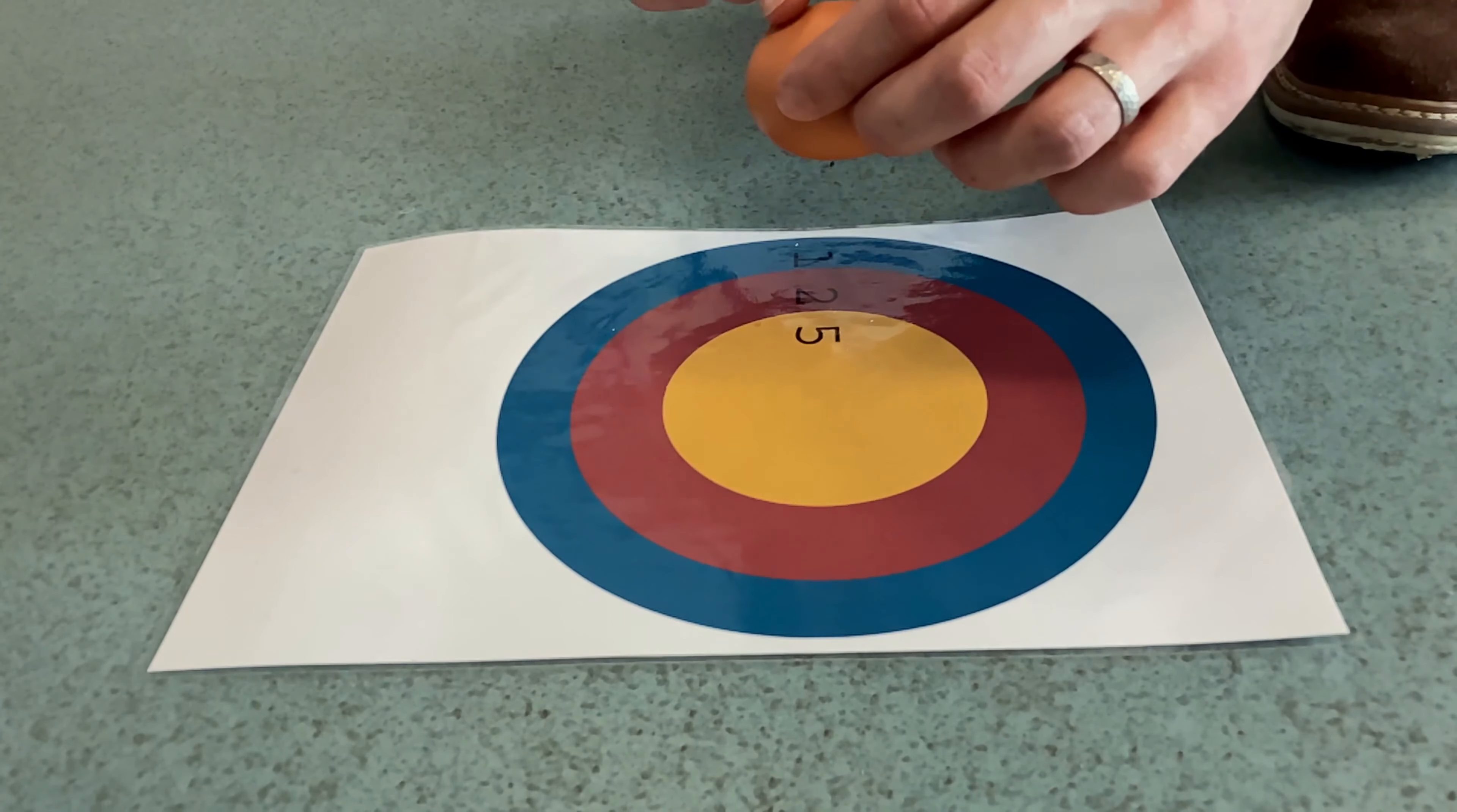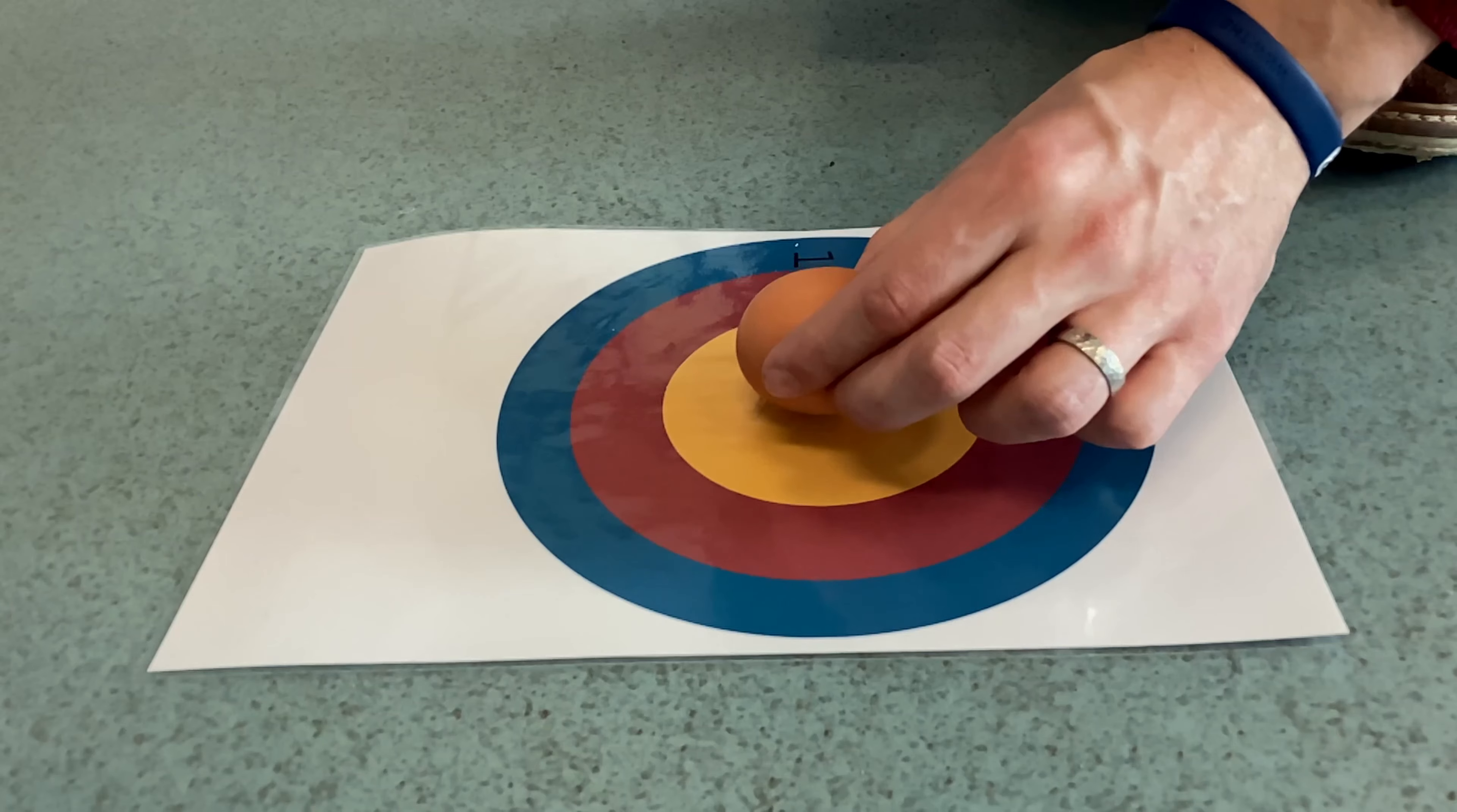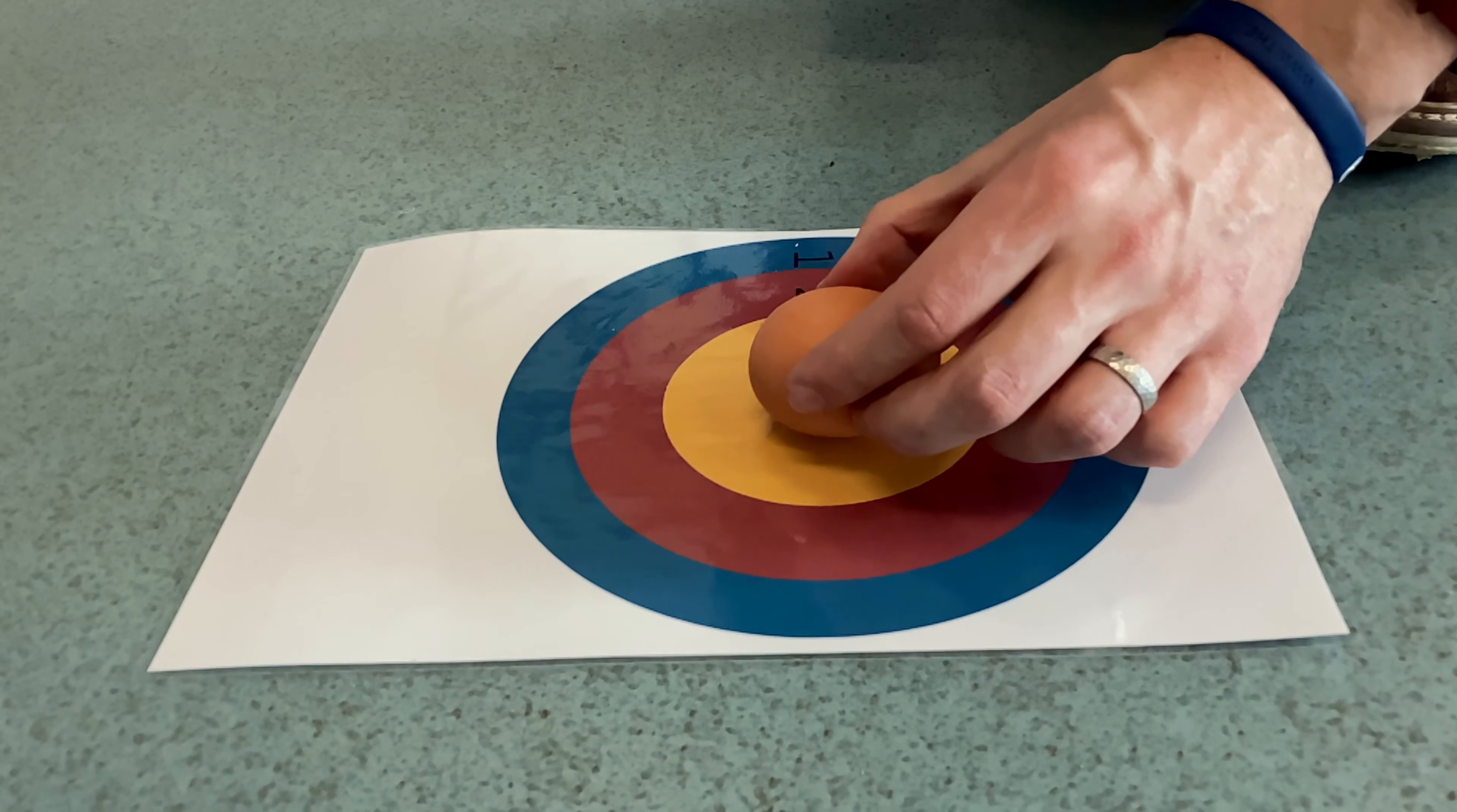To explain these we're going to do a super serious scientific experiment: dropping things on eggs to see if they smash.